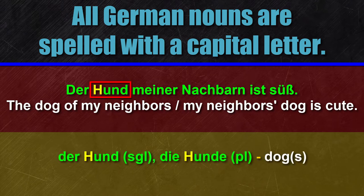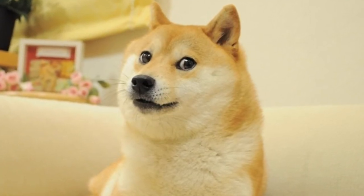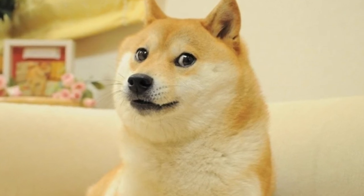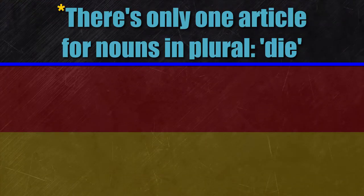For example: 'Der Hund meiner Nachbarn ist süß.' This sentence contains two Substantive: 'der Hund' (singular), 'die Hunde' (plural), and 'der Nachbar' (singular), 'die Nachbarn' (plural). And this actually leads us to the second simple German grammar rule.